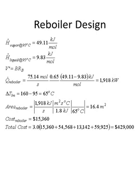The costs calculated so far do not account for installation, plumbing, and electrical work, which is approximately a factor of three times the purchase cost. The total cost of our plant is three times the individual purchase cost of the four pieces of equipment, and that comes out to be $429,000 for our plant.